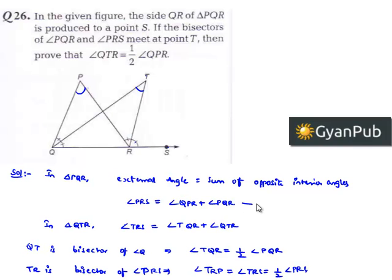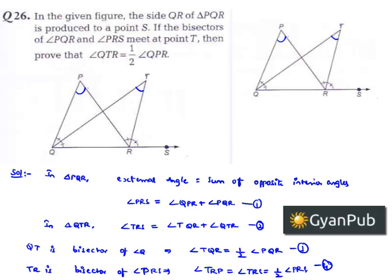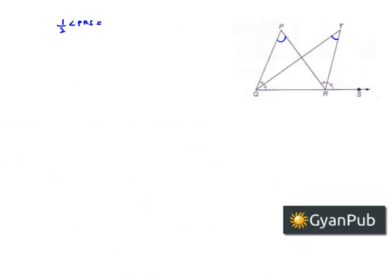Now, let us name these equations as 1, 2, 3, and 4. Since angle TRS is equal to half times angle PRS, we can write the second equation as: half times angle PRS is equal to angle TQR plus angle QTR. That implies angle PRS is equal to 2 times angle TQR plus 2 times angle QTR.